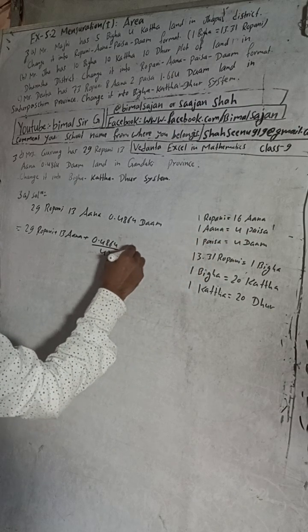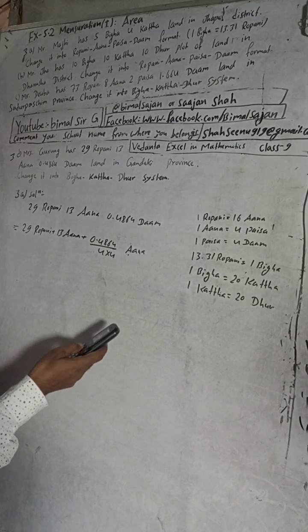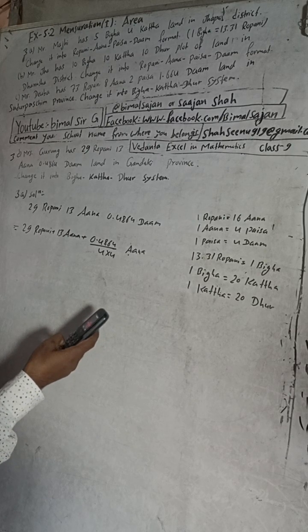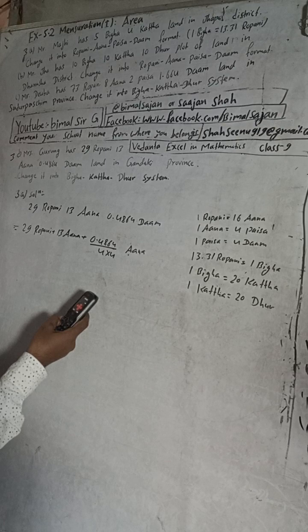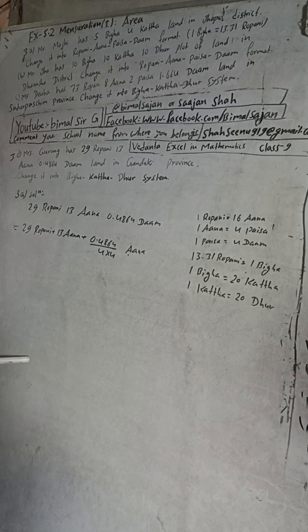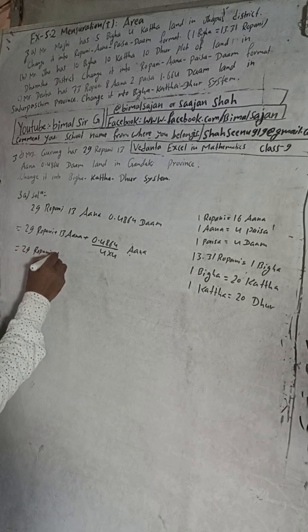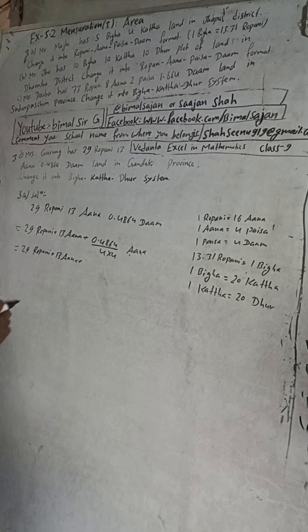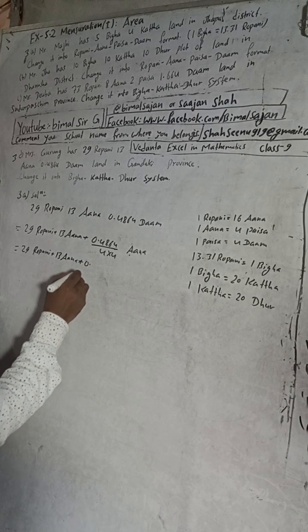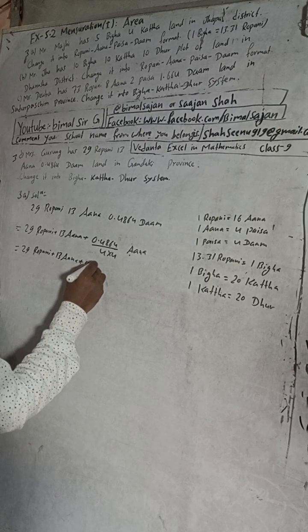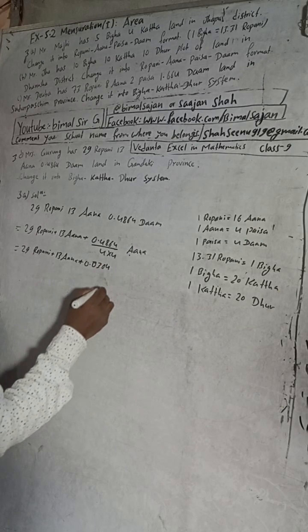So when you divide this again by 4, we will get it into Ana. So this is what now Ana will be. Now divide this plus 0.4864 divided by 16. So this all same, 29 Ropuni plus 13 Ana plus 13 Ana plus 0.0.